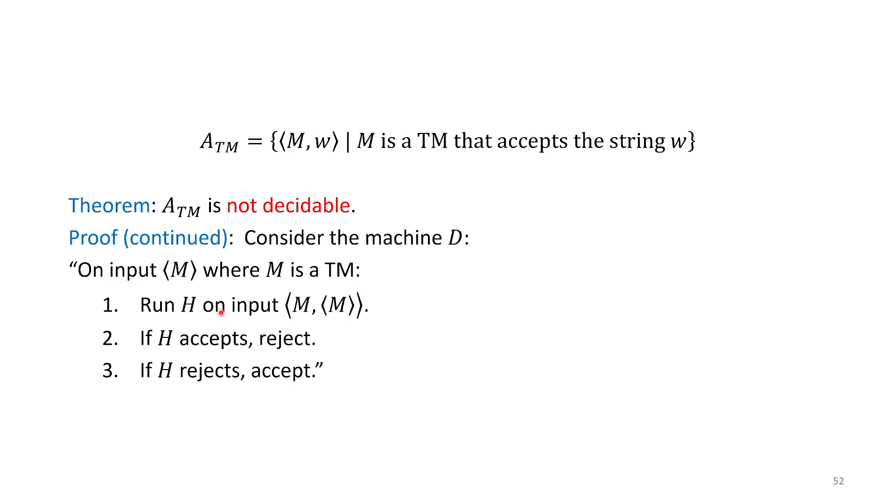Now what are we going to do? Something very bizarre. If H ends up accepting, we're going to reject. If H ends up rejecting, we're going to accept. We're going to do the opposite of whatever H says M does on M.